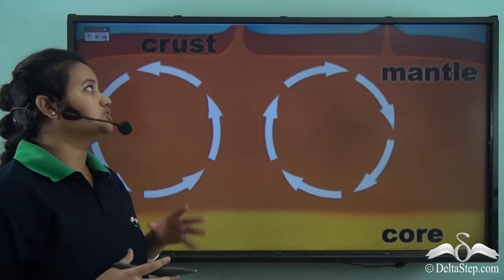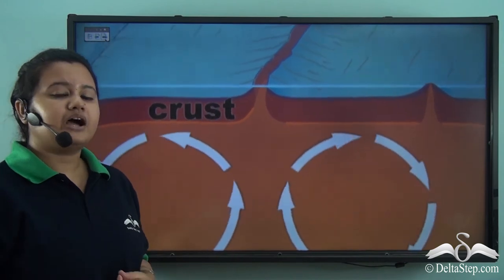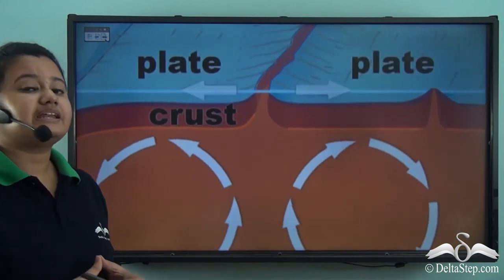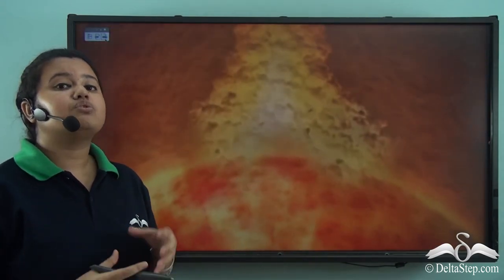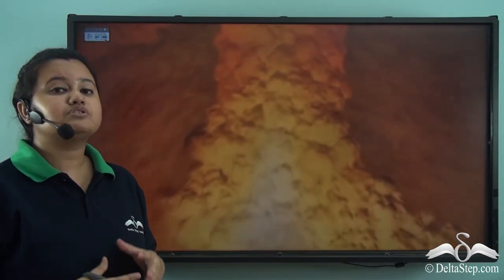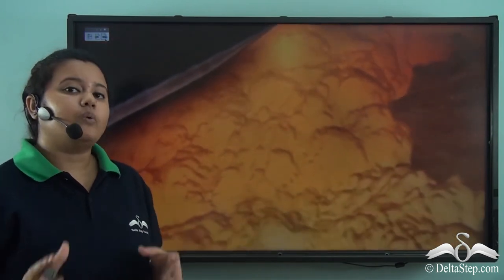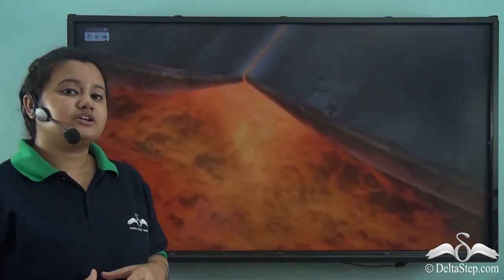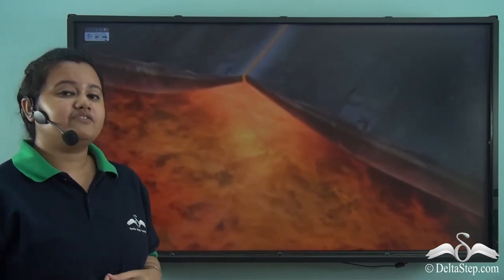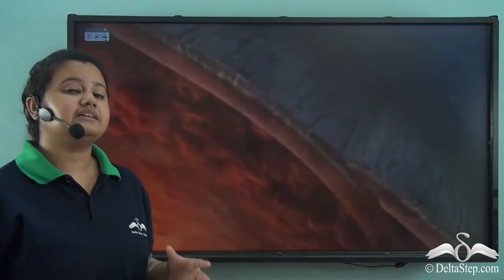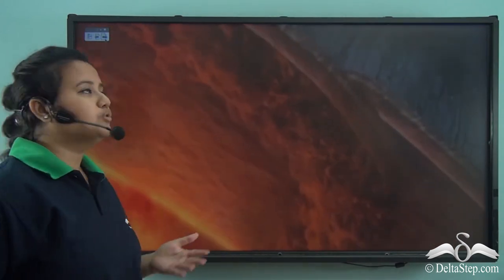This churning motion causes the tectonic plates to drift apart. Gravity also plays an important role in this process — it acts more strongly on the cooler and denser plates, while the hotter and lighter plates remain above. Thus, convectional currents and gravity go hand in hand, and these two forces cause the tectonic plates to move.